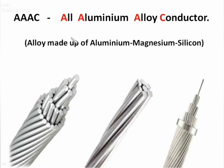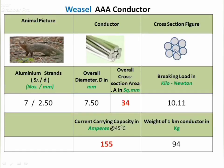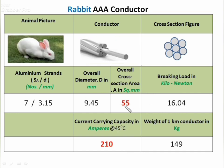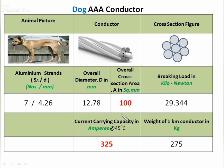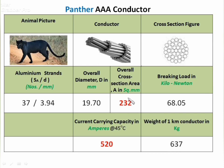Now we will see the AAAC (All Aluminium Alloy Conductor). This alloy is magnesium and silicon mixed with aluminium. Weasel AAAC has cross-sectional area 34 mm² and 155 A current capacity. Rabbit AAAC has 55 mm² area and 210 A current capacity. Dog AAAC has 100 mm² area and 325 A current capacity. Panther AAAC has 232 mm² area and 520 A current capacity.